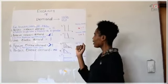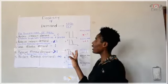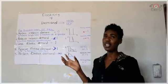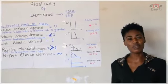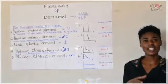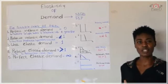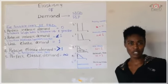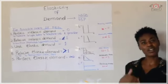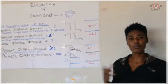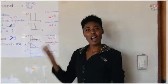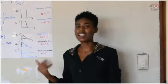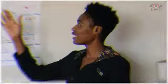That is all about the elasticity of demand. As we know from the law of demand, the higher the price, the lower the quantity people demand, and the lower the price, the more people demand goods and services. But how much less and how much more — that is the idea of elasticity of demand.